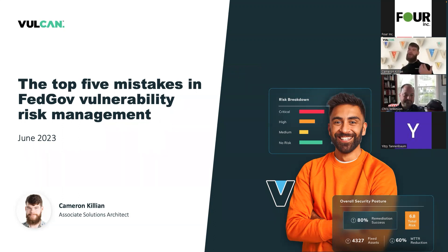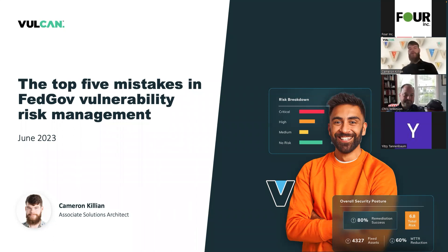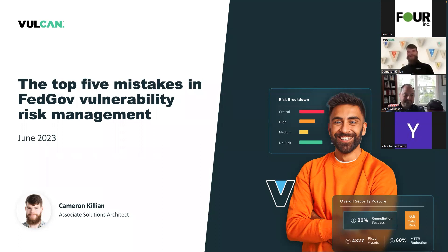Today I'm going to share a little bit about the top five mistakes that a lot of organizations often face when it comes to their vulnerability risk management programs. We're going to discuss some best practices to potentially resolve or prevent those mistakes. And then we're going to talk about Vulcan and how it can alleviate some of those headaches. Just a fun fact about myself — I love to travel. I've been to 27 of the United States and 15 countries.